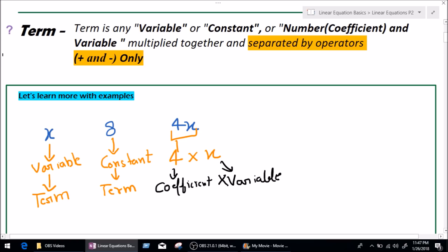Okay. So, coefficient multiplied variable. As we can see in our definition, coefficient and variable multiplied together are also terms. So, we can call them a term. So, they are also a term. So, now we know what is a term.